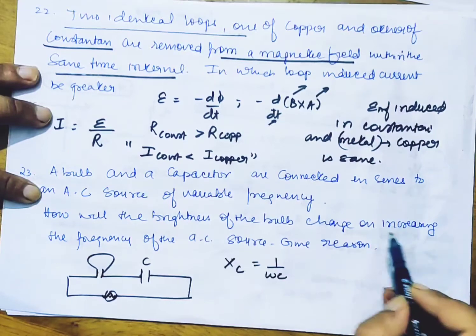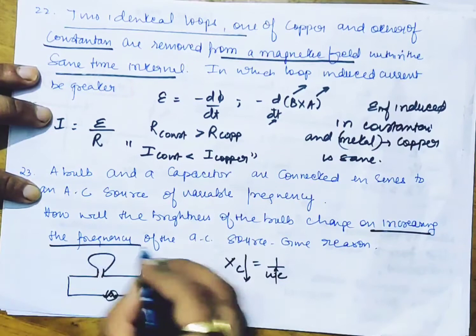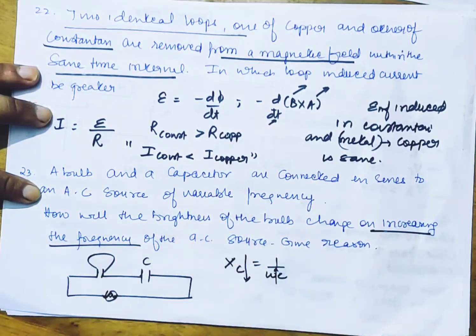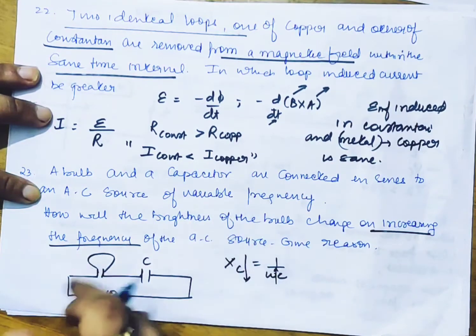If the frequency is increased, the reactance is decreased. The reactance is the obstruction of the flow of AC. The obstruction of AC is decreased. The obstruction is decreased, the current increases. The circuit current increases. The brightness is increased.